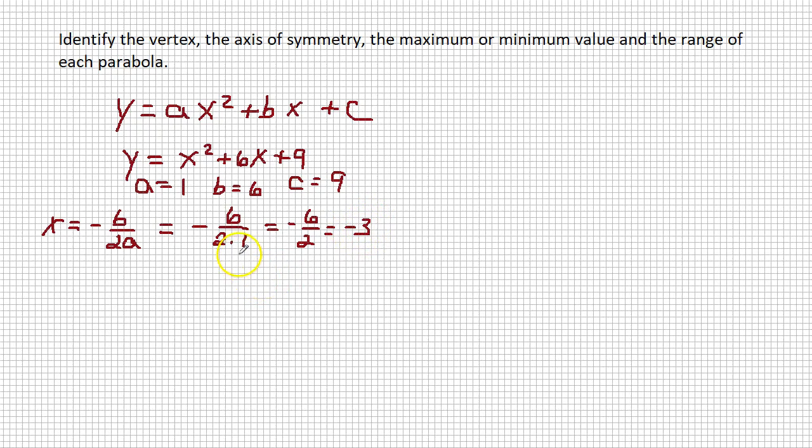Now, how do we find the y coordinate of the vertex? We're just going to plug it into the original equation. So y equals, in place of x we're going to put negative 3 squared plus 6 times negative 3 plus 9. Negative 3 squared is 9, 6 times negative 3 is negative 18, so minus 18 plus 9. These are going to add to 0, so our y equals 0.